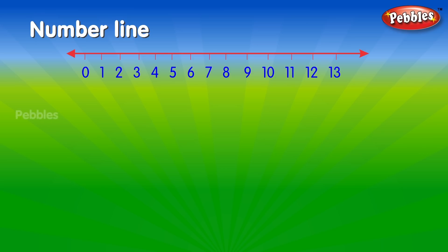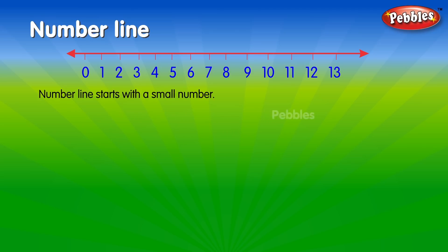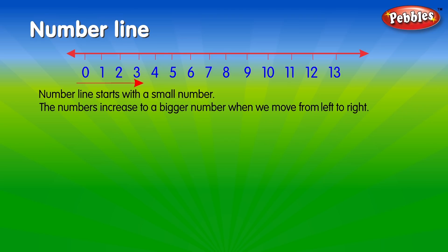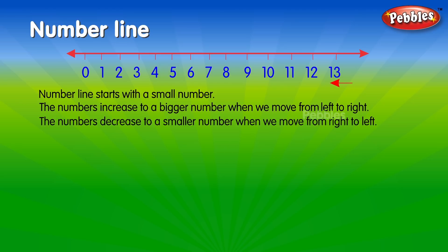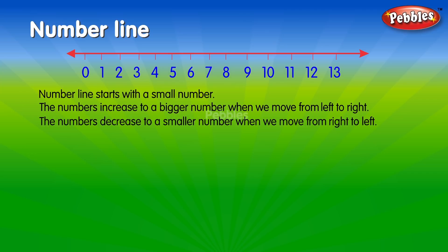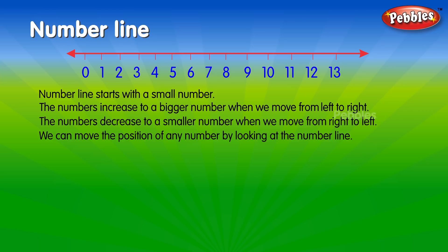Number line. A number line starts with a small number. The numbers increase to a bigger number when we move from left to right. The numbers decrease to a smaller number when we move from right to left. We can find the position of any number by looking at the number line.